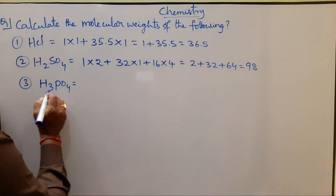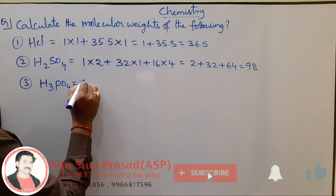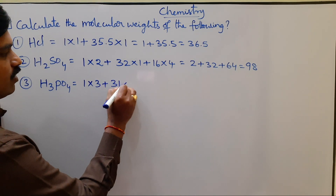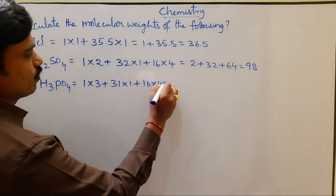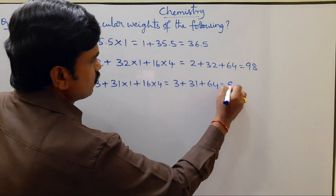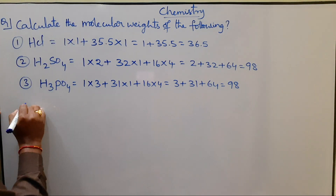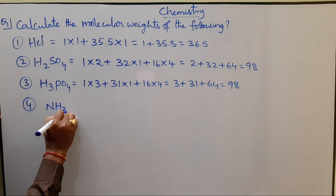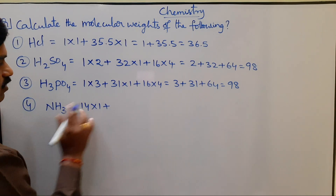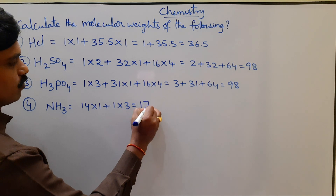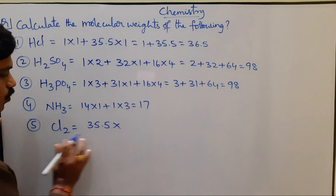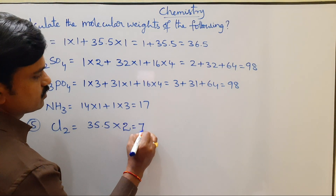Third is Phosphoric acid, H3PO4. Three atoms of hydrogen: 1 × 3, plus Phosphorus atomic weight 31 × 1, plus Oxygen 16 × 4. That is 3 plus 31 plus 64 equals 98. Next is Ammonia, NH3. Nitrogen atomic weight 14 × 1, plus Hydrogen atomic weight 1 × 3, equals 17. Next is Cl2: Chlorine atomic weight 35.5 × 2 equals 71.